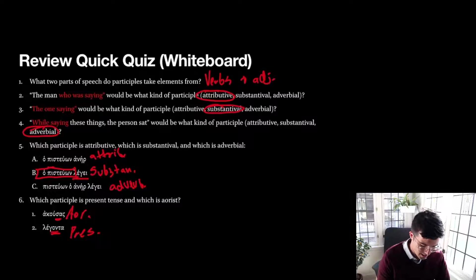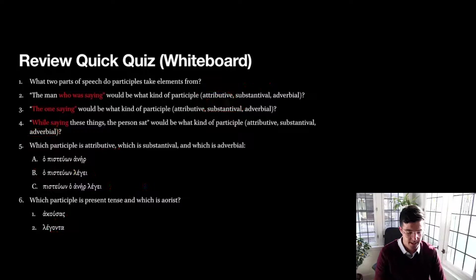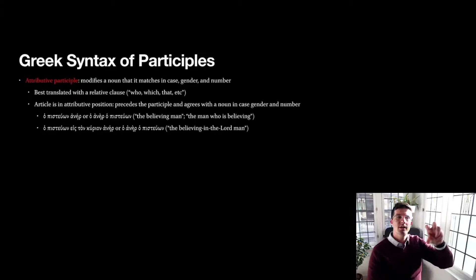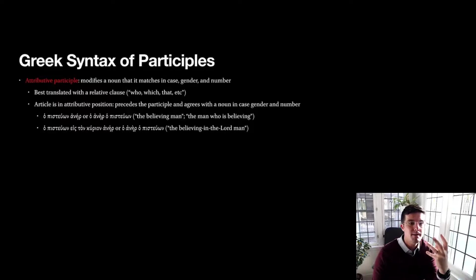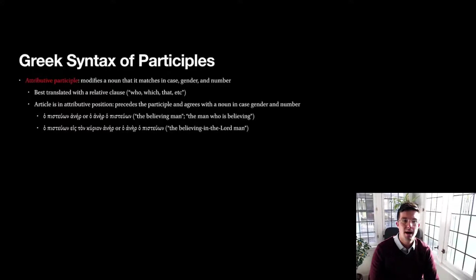The augment only occurs in the indicative mood. And then 'legonta' is going to be present — we have this 'ont' here indicating the present, as well as the fact that we don't have a changed stem there. So to the Greek syntax of participles: this is returning back to some things we talked about in the first video, and we're going to pick them back up here by way of just a little bit of review, because hearing things and seeing things more than once helps us learn it better.